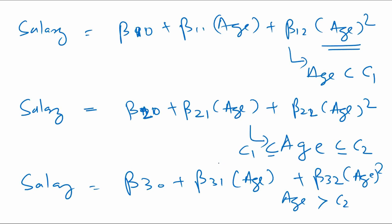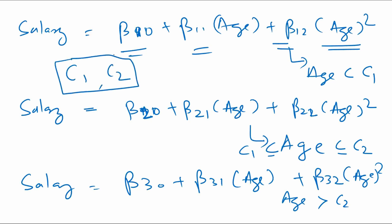We now have more parameters to determine — we have the beta parameters. How many beta parameters do we have now? With a single polynomial regression we had just 3 parameters, but now we have 9 parameters. We also need to find out what C1 and C2 are — the thresholds — and how many thresholds there should be. Those are also found through different means, and one of the most commonly used means is cross-validation.